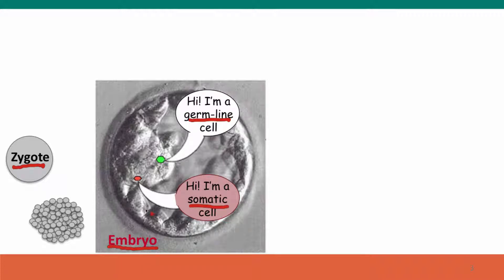Early in embryo development, already most of the cells of the embryo — including this little patch that's highlighted here — are somatic tissue. They're going to give rise to almost all the body parts of the adult organism. Only a small group of cells, already specialized and dedicated to one particular fate, are going to give rise to the sexual cells — the eggs or sperm that this adult will produce.